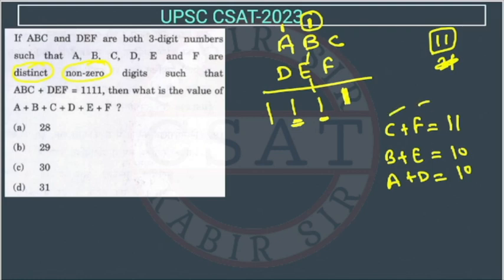Now there's no need to find individual values of C, E, F, B. Just add them all. We get A+B+C+D+E+F. This is what they're asking. The addition equals 10 plus 10 plus 11, which is 31. So the answer is option D.